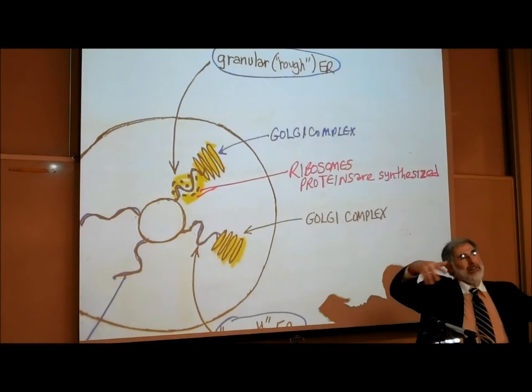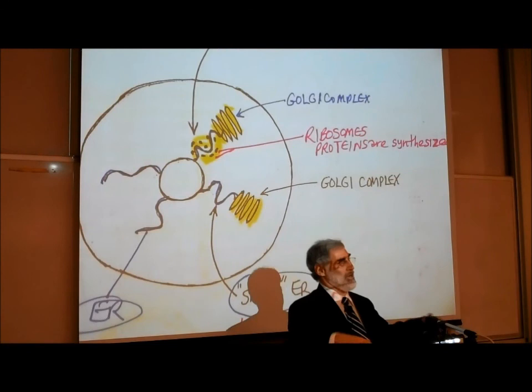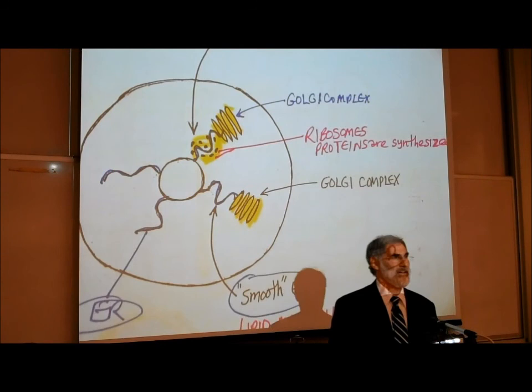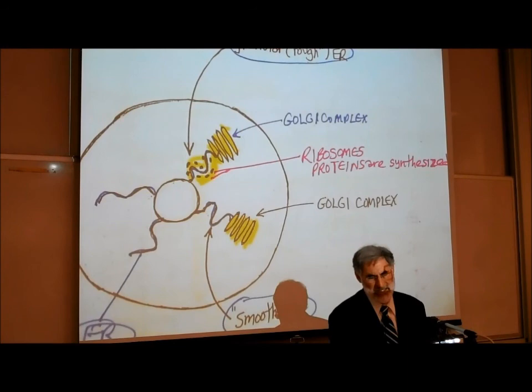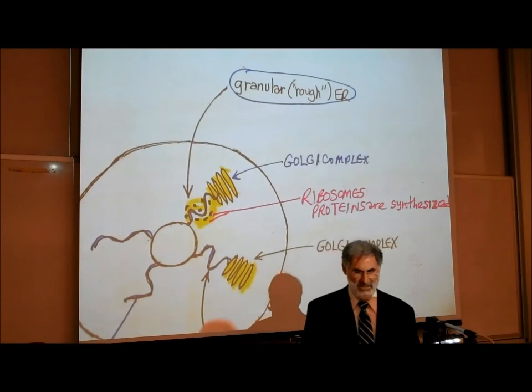The purpose of the ribosomes of the granular or rough ER is that proteins are manufactured there — synthesized from amino acids at the ribosomes of the granular ER. So steroid hormones are made in the smooth ER, and proteins are made in the ribosomes of the rough ER. Ribosomes are made up of RNA and are synthesized in the nucleolus.